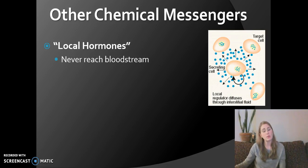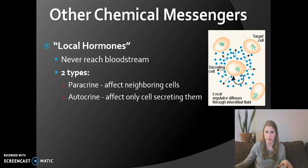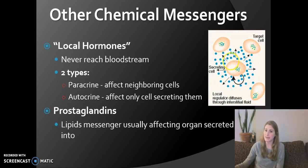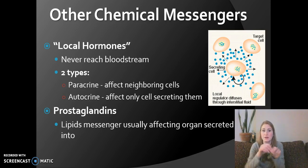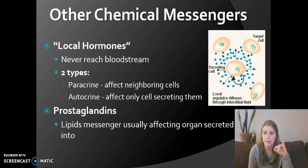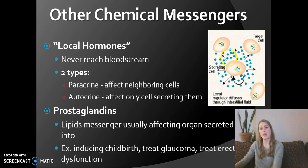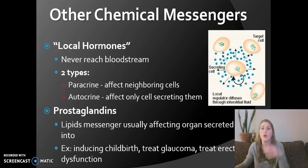Local hormones are ones that never reach the bloodstream. They go from one cell to a very nearby cell, or affect the cell itself. This defines paracrine — affecting neighbor cells — and autocrine, meaning they affect only themselves. Prostaglandins are chemical messengers that only affect things immediately around them and can be secreted by any tissue, not a specific gland. For example, if you get a cut on your pinky, prostaglandins are released to cause the blood vessels in your pinky to constrict so you don't lose as much blood. Other examples include childbirth, glaucoma, and erectile dysfunction — all secreted by the organ or tissue for the organ or tissue.